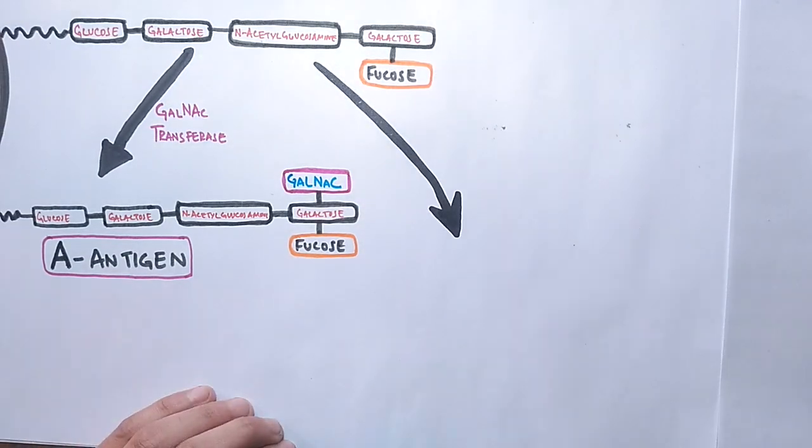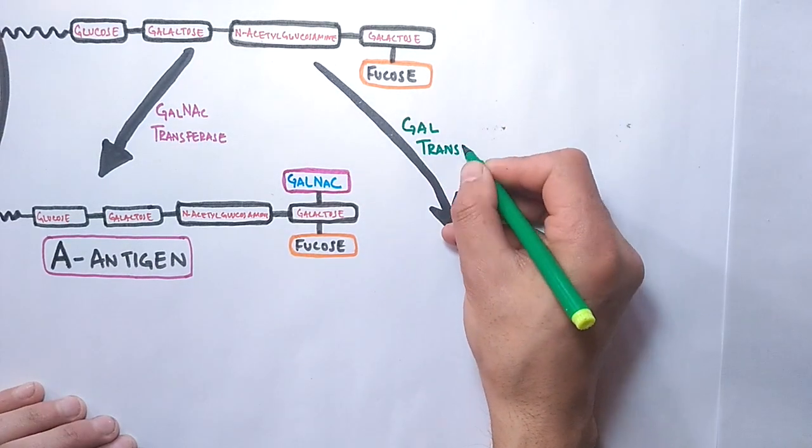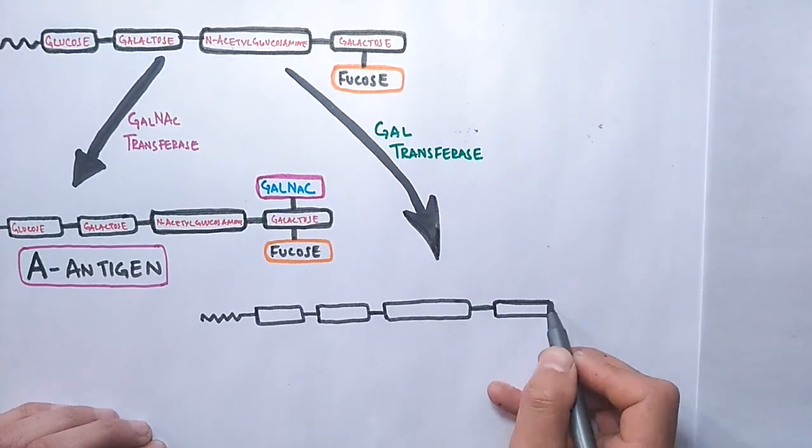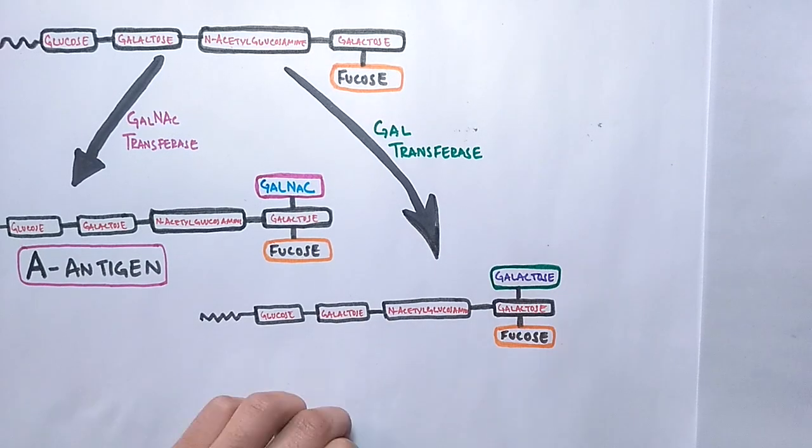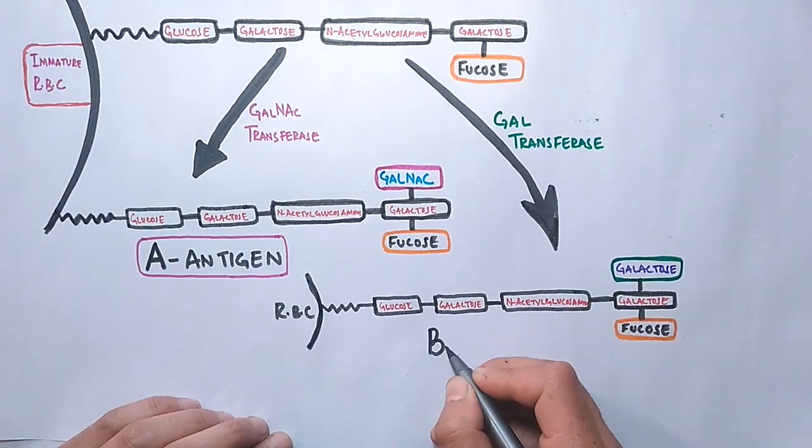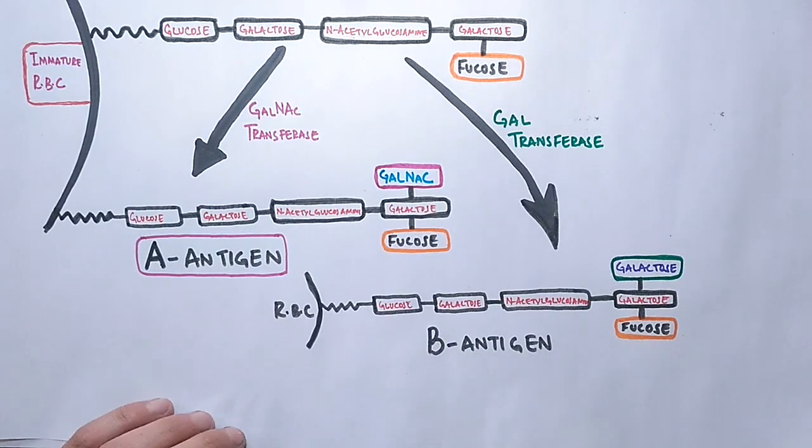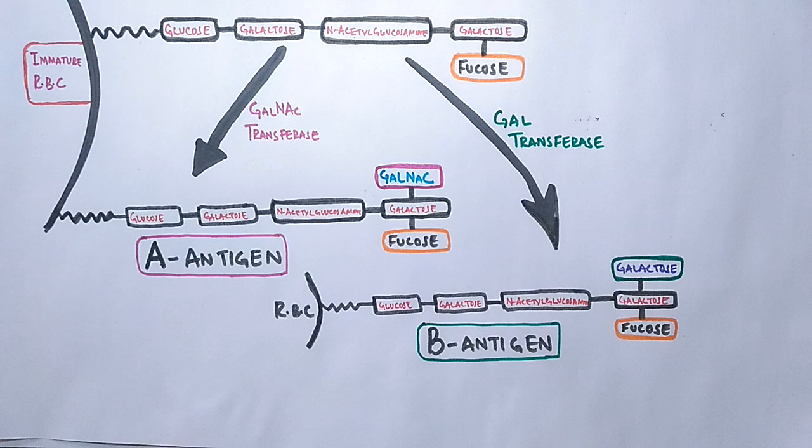Then we have B allele expressing individuals where we get galactose transferase enzyme, and this galactose transferase enzyme transfers the galactose towards the H antigen which catalyzes the formation of B antigen from H antigen.